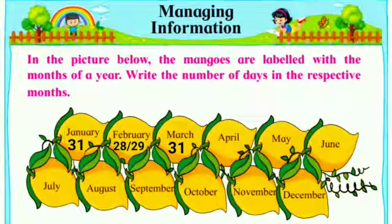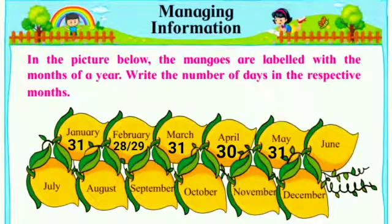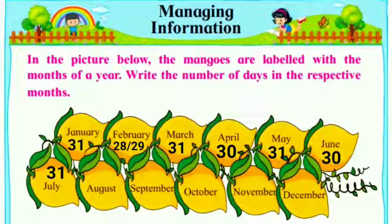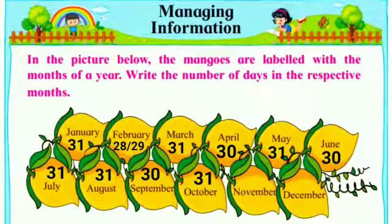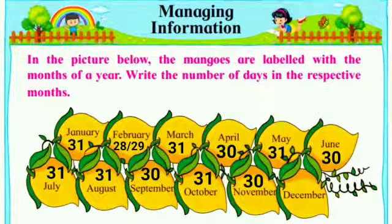April has 30 days. May has 31 days. June has 31 days. July has 31 days. August also has 31 days. September has 30 days. October has 31 days. November has 30 days. And December, the last month of the year, has 31 days.